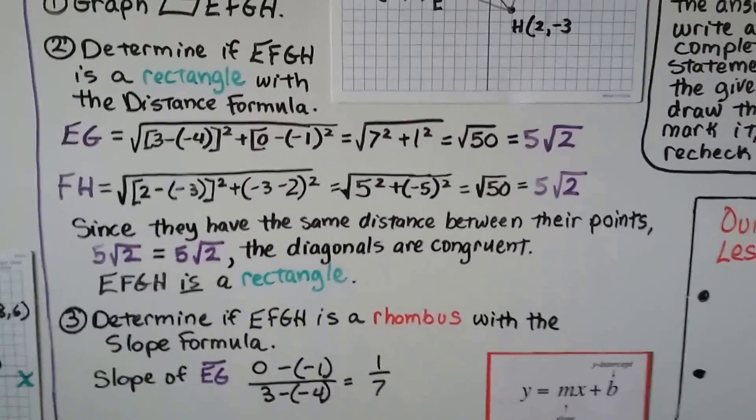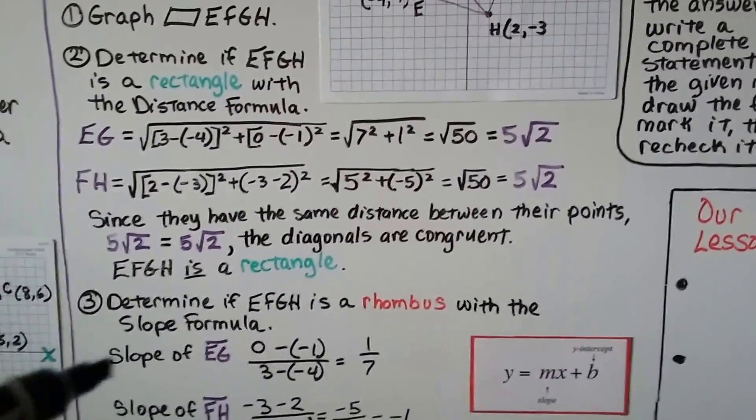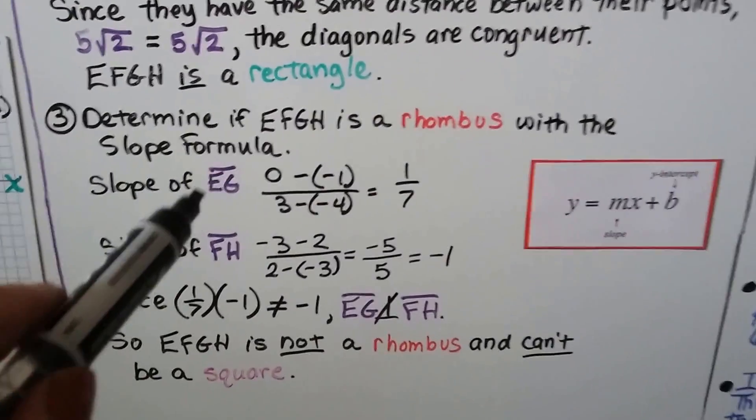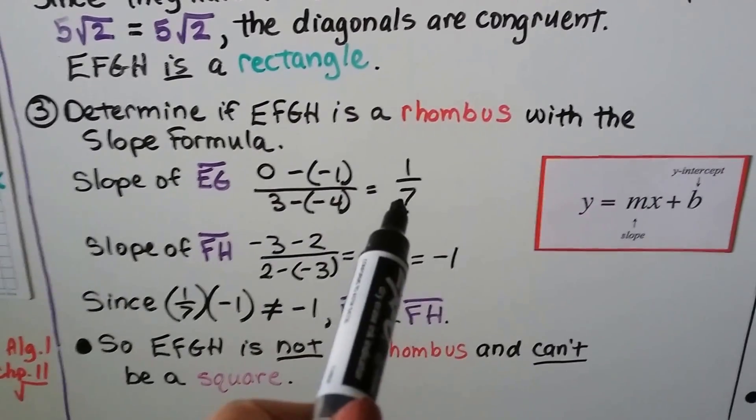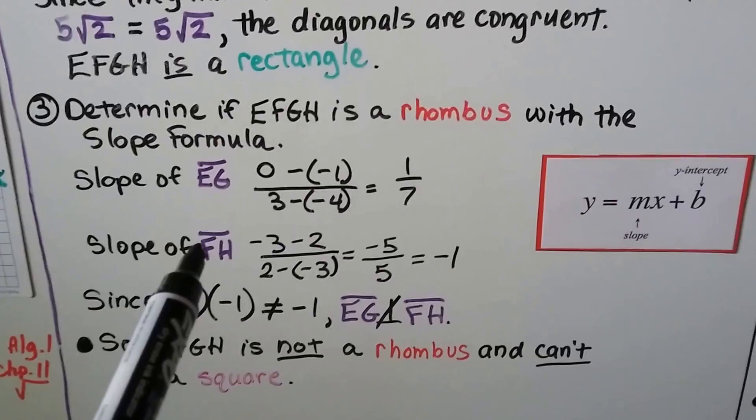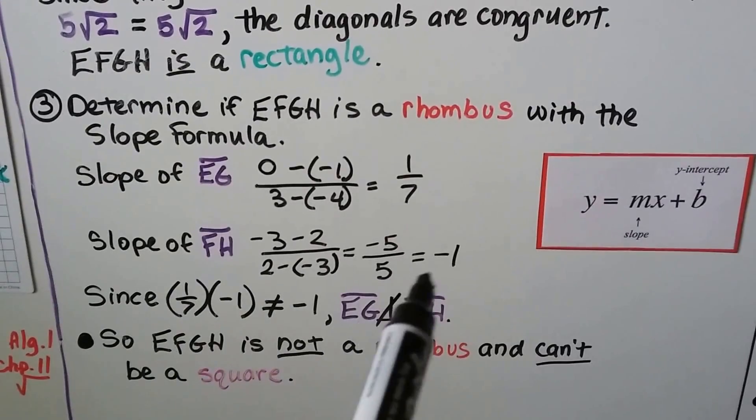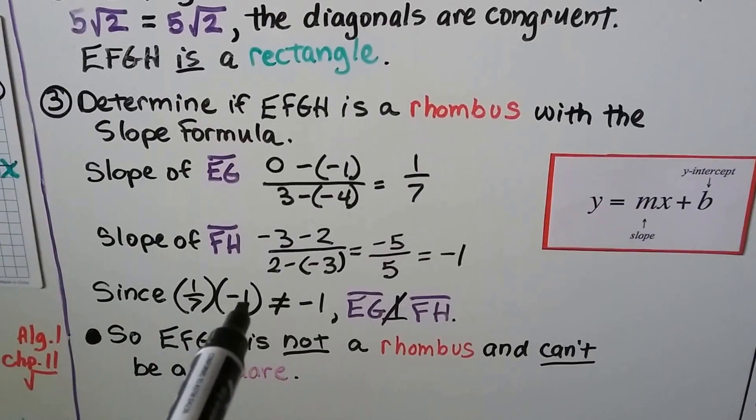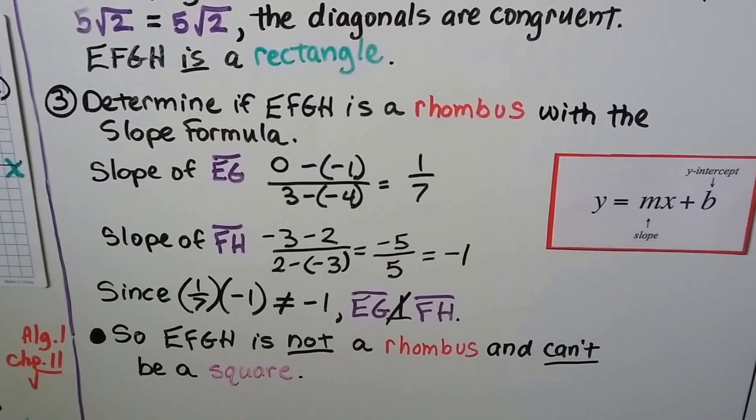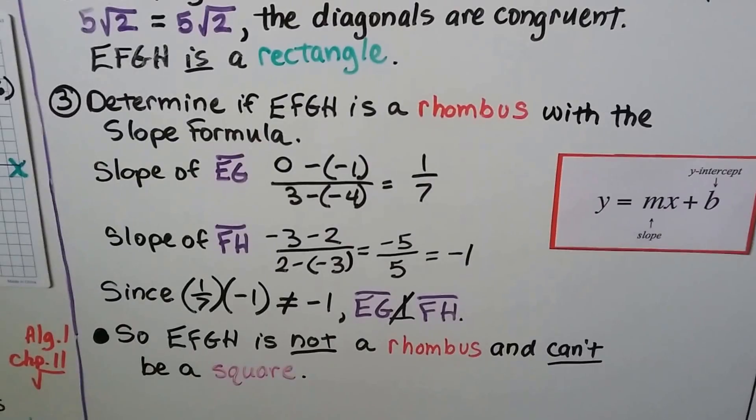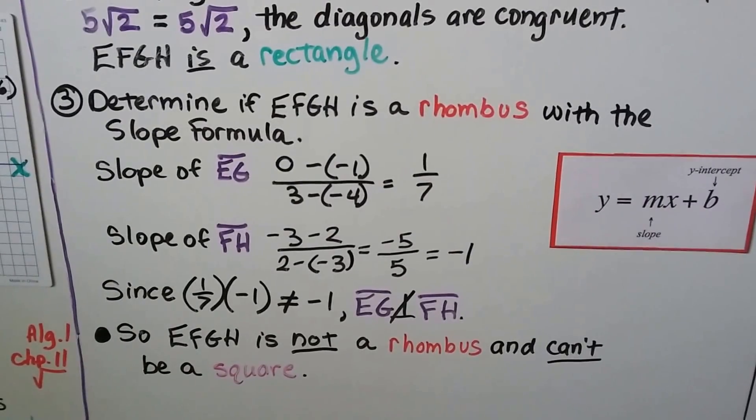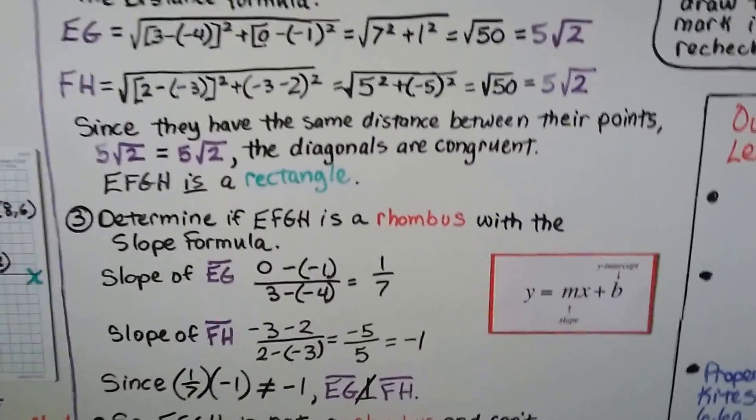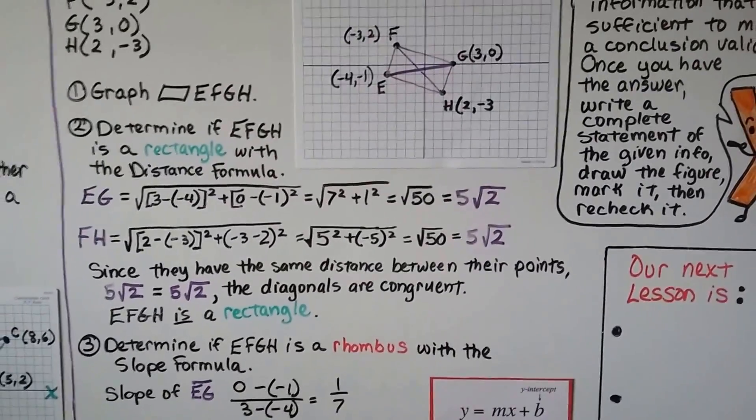Now we determine if EFGH is a rhombus with the slope formula. We put in the ordered pairs for E and G, and we get a slope of 1/7. We put in the ordered pairs for F and H, and we get a slope of negative 1. And when we multiply 1/7 times negative 1, it does not equal negative 1. So they're not perpendicular. So EFGH is not a rhombus and can't be a square. But it is a rectangle.